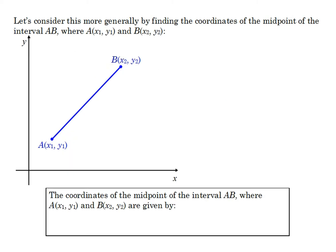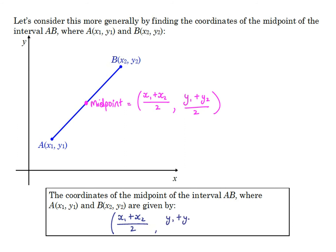Let's think about that more generally. If we have points A and B with coordinates (x1, y1) and (x2, y2) respectively, the midpoint is going to have coordinates that are the average of the coordinates of A and B. So its x-coordinate will be (x1 + x2) / 2, and its y-coordinate will be (y1 + y2) / 2. And so we have our general formula: ((x1 + x2) / 2, (y1 + y2) / 2).